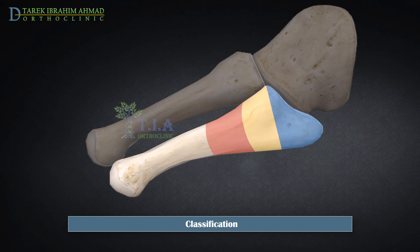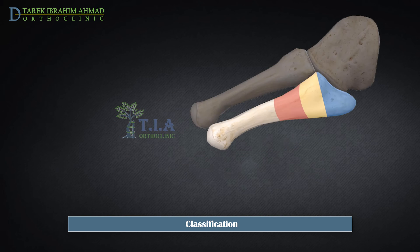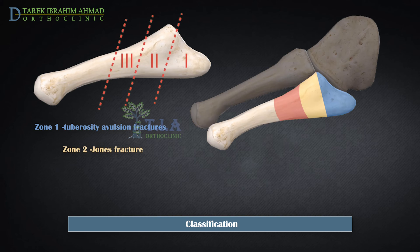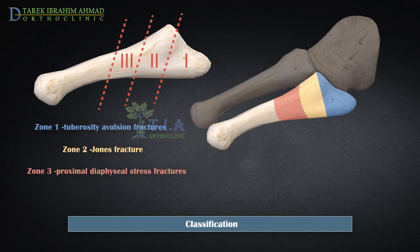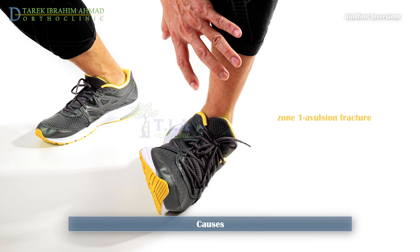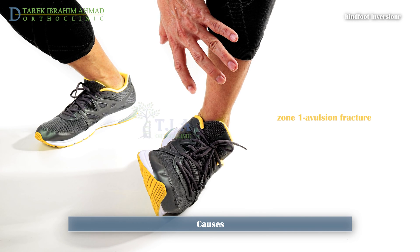Compare the fracture line's location to the intermetatarsal joint, which lies between the bases of the fourth and fifth metatarsals. Zone 1 fractures, or tuberosity fractures — also called pseudo-Jones fractures — exit proximal to the intermetatarsal joint; they are avulsion fractures. Zone 2 fractures, or Jones fractures, extend into or towards the intermetatarsal joint. Zone 3 fractures typically exit or extend distal to the intermetatarsal joint; they are stress fractures.